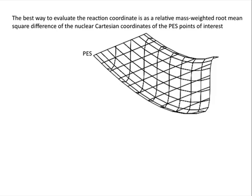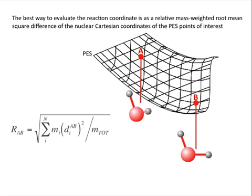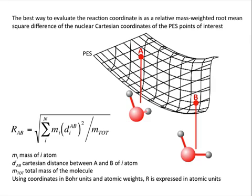For example, if the figure is the potential energy surface of the water molecule, one could take two different structures, A and B, representing two different situations of the molecule.